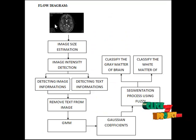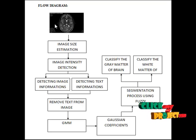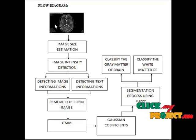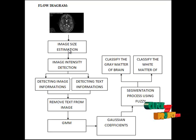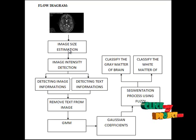This is the flow diagram of our project. In the first step, we initialize the given image. The image contains both the brain image and other text, such as patient details. These unwanted texts are first removed and we extract the brain image only.